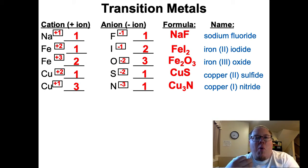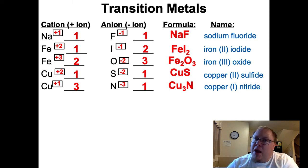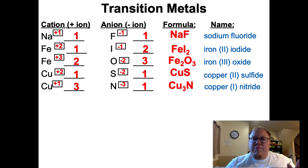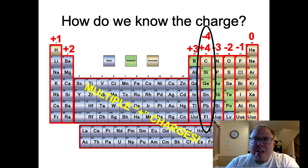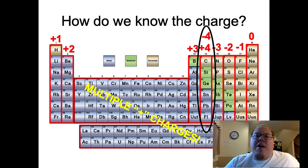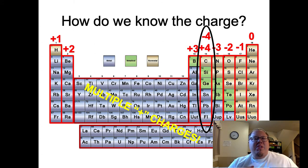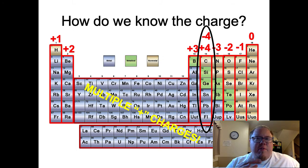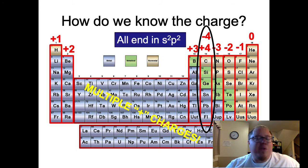That is how the transition metals work - the charge of the transition metal is going to be part of the name, so you can figure out the formula from that. Now there is one other section of the periodic table that can have multiple charges. Going back to the periodic table, there's this column right here in the middle - the carbon family. You can have either a positive 4 or a negative 4, depending on if it's a metal or nonmetal. It's actually even more complicated than that.